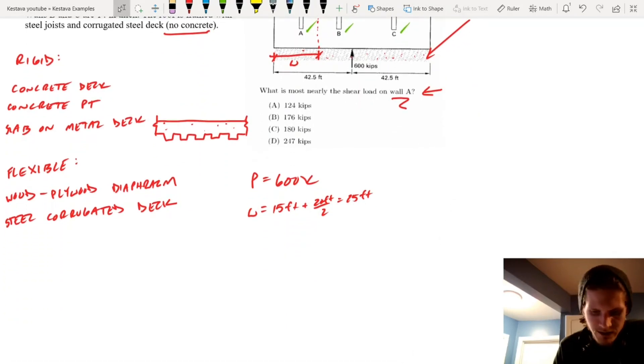So, that's really simple, right? That's just P divided by L, L being the full length of the diaphragm. So, L is 42.5 feet plus 42.5 feet. L is going to equal 85 feet.